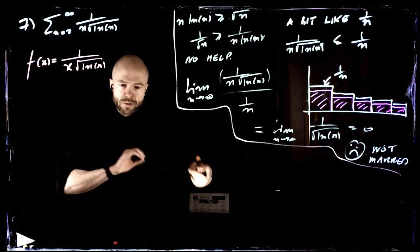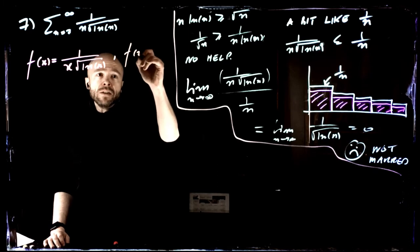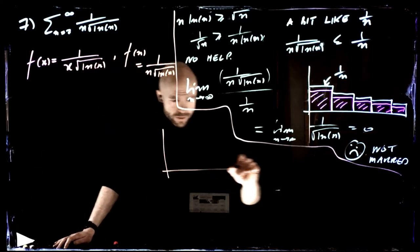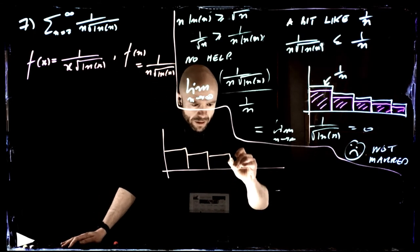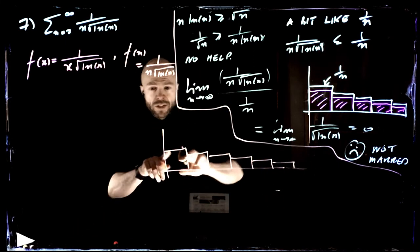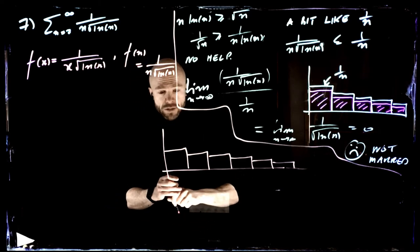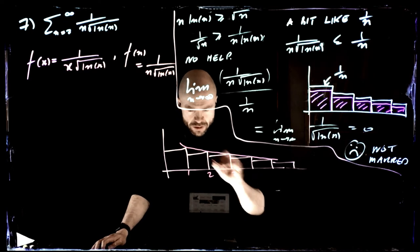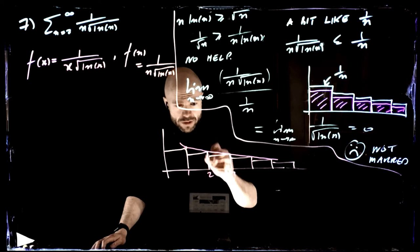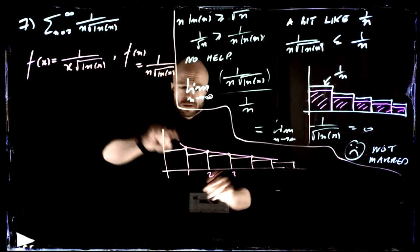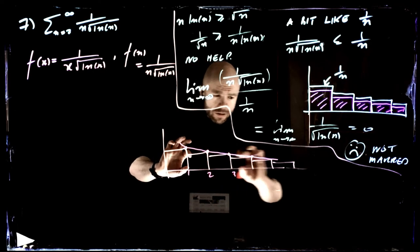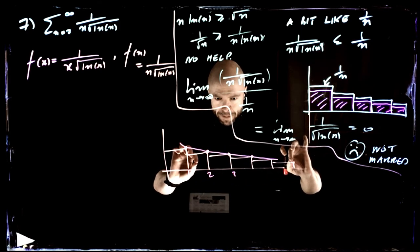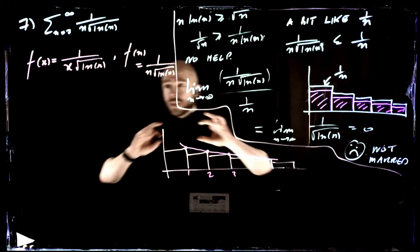The series converges if and only if the area of all these blocks added up to infinity is finite. This function goes through our sequence points exactly: f(1) is the first term, f(2) is the second term, and so on. If the area underneath the graph from 1 to infinity is finite, the series converges; if infinite, the series diverges. So all we need to do is check the convergence of this integral.